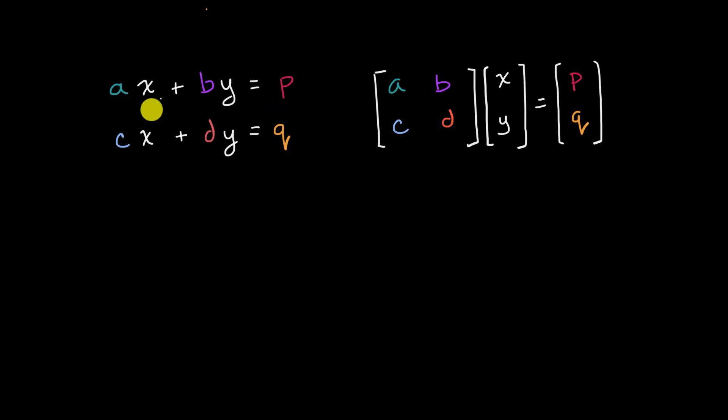And you can represent this type of system as a matrix vector equation like this, where the coefficients on the x's are this first column, coefficients on the y's are the second column, and then we see our unknown variables, what we would want to solve for maybe as this vector here. So you could do that as the unknown two-dimensional vector.